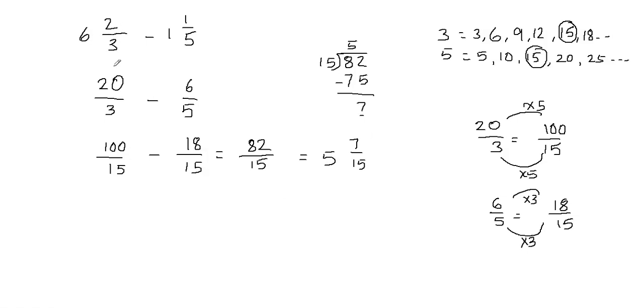So when you subtract 6 and 2 thirds minus 1 and 1 fifth, you get 5 and 7 over 15. That's the final answer. I hope you find this video helpful. If you're new to this channel and want to see more videos on other math topics, be sure to subscribe and share it with your friends. See you next video.